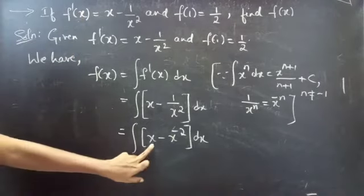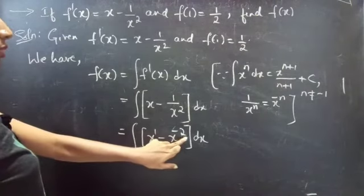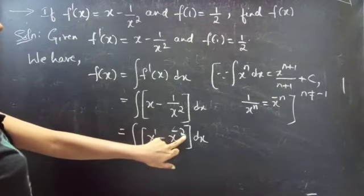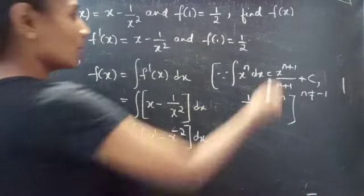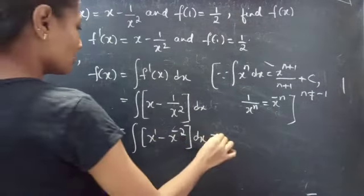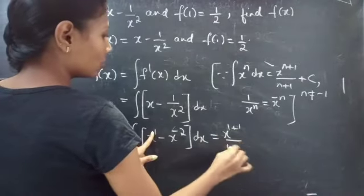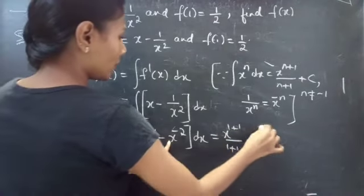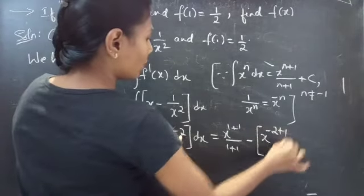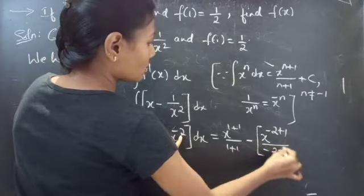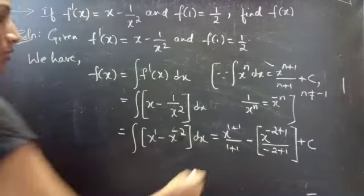So now for the integral of x^1, n equals 1, and for x^(−2), n equals minus 2. We don't have any n equals minus 1, so we can apply the power rule formula. This equals x^(1+1) divided by (1+1), minus x^(n+1) divided by (n+1), plus constant c.